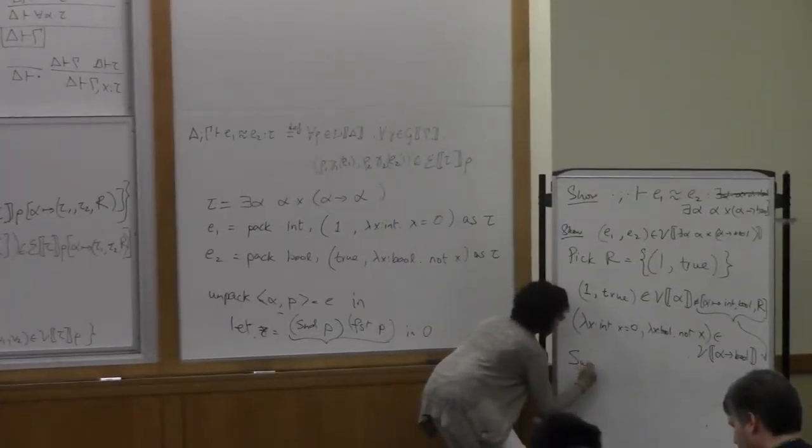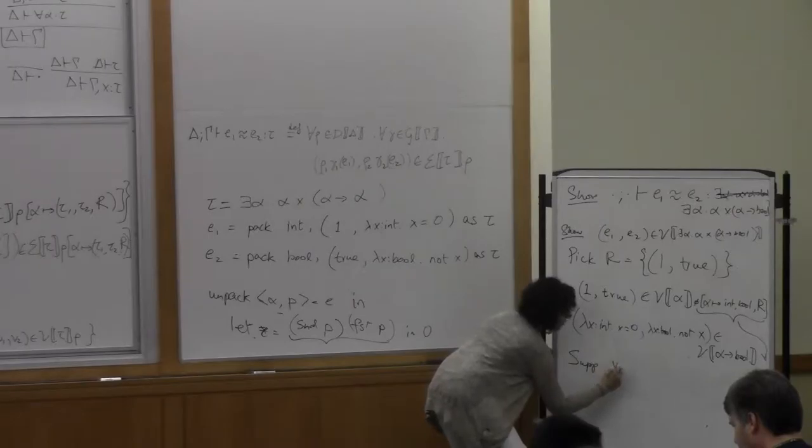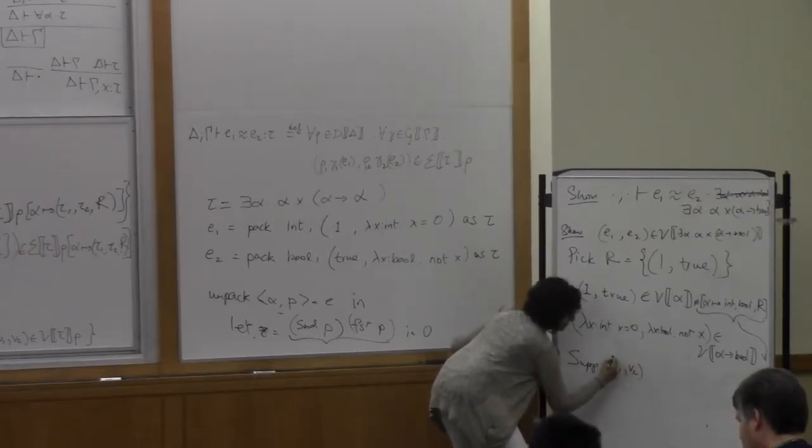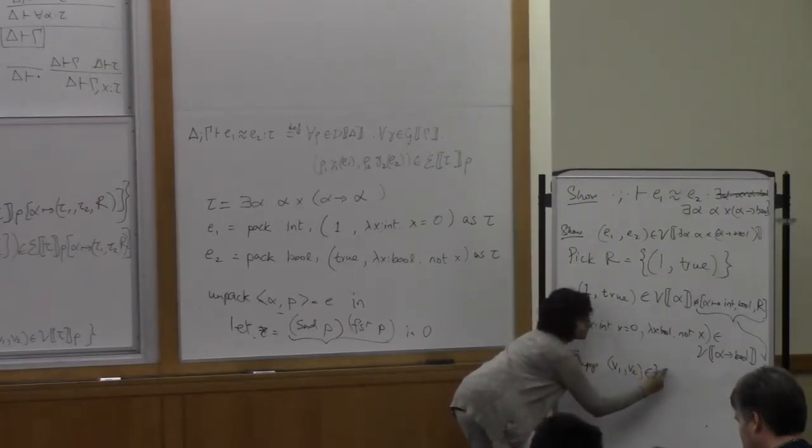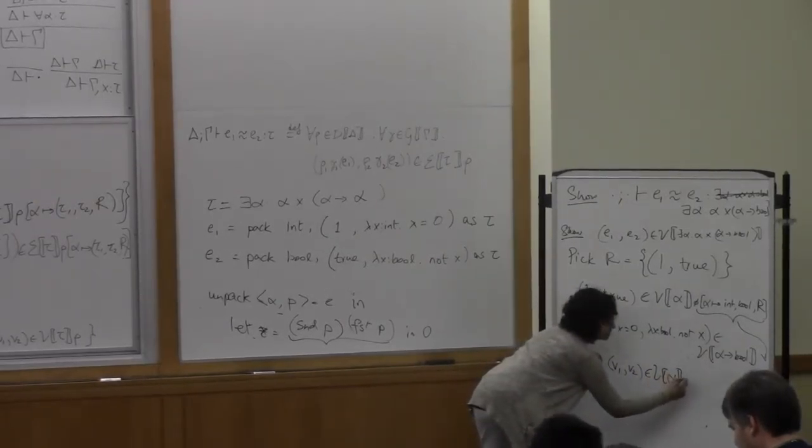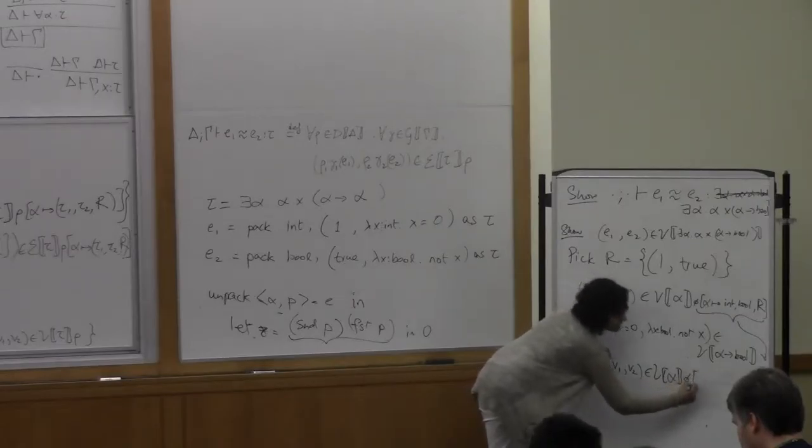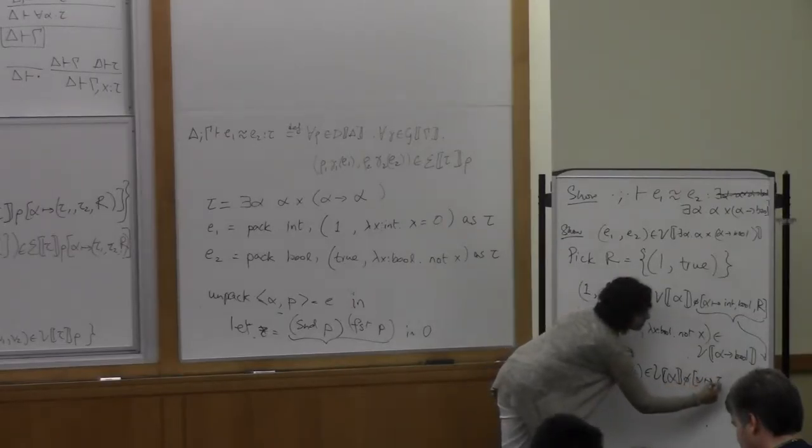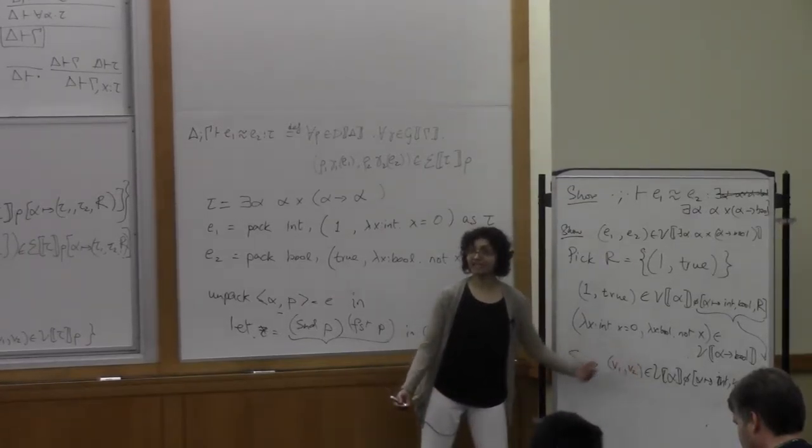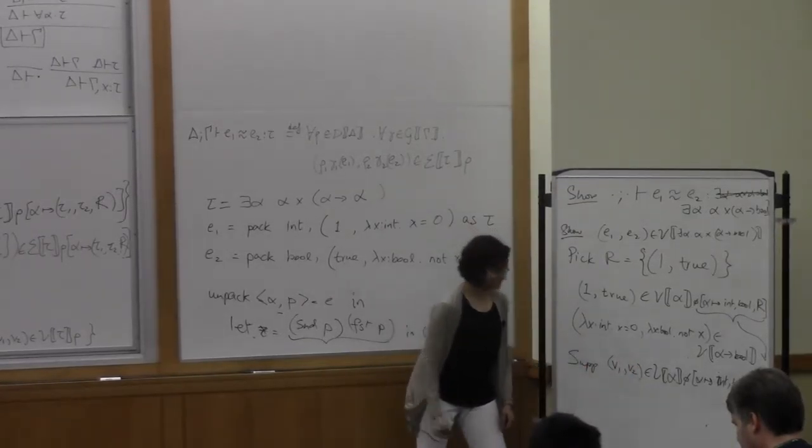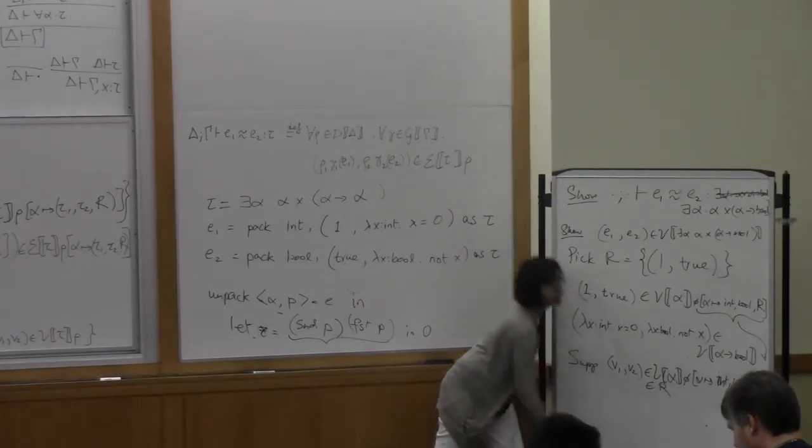Suppose that I have two things, V1 and V2, any arguments that are related at the argument type alpha. V alpha, my environment contains alpha maps to int, bool, and R. So I'm saying, suppose V1, V2 are related at V of alpha. In other words, I'm saying, suppose V1, V2 are in R.